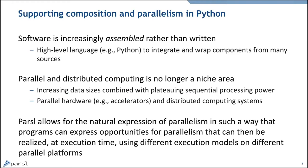Parcel has been written to express parallelism so that programs can say what pieces could be run in parallel, and then at execution time we actually figure out how best to run those on the available resources. If people are familiar with Swift — one of the boxes in a previous talk — Parcel is a re-implementation of Swift from scratch in Python, because we wanted to start again in a common language and clean up old code.